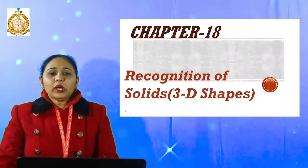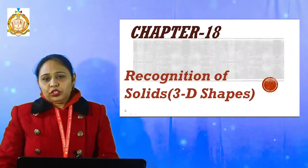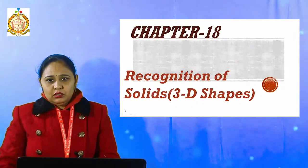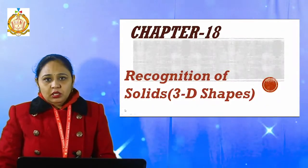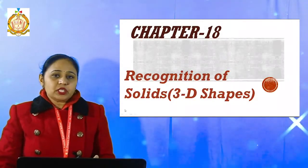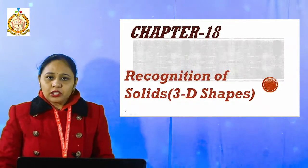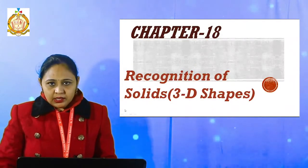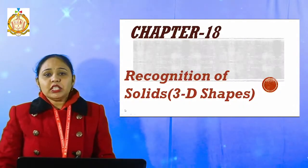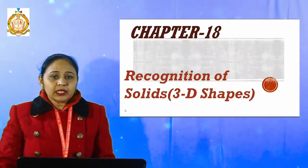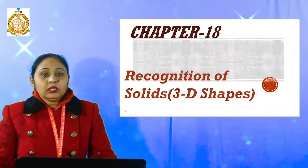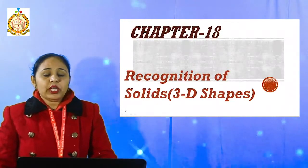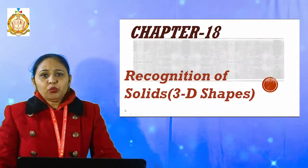Now what is the meaning of 3D? Three dimensions. Now three dimensions — which are those? One is length, second one is breadth, and third one is height. These are the three dimensions of any solid.